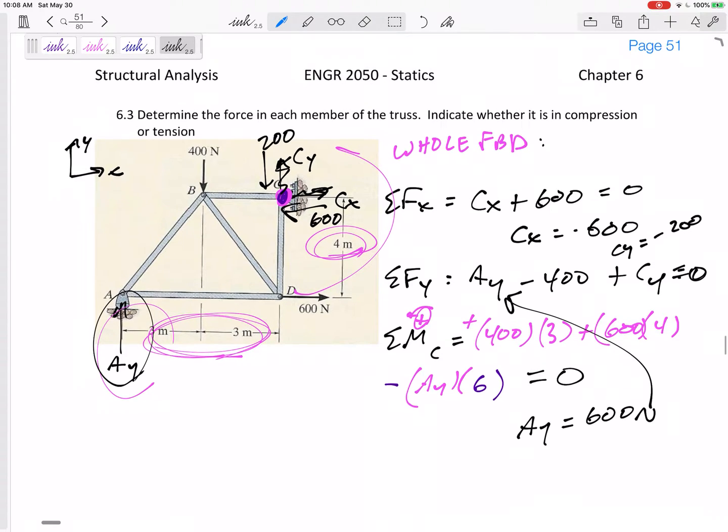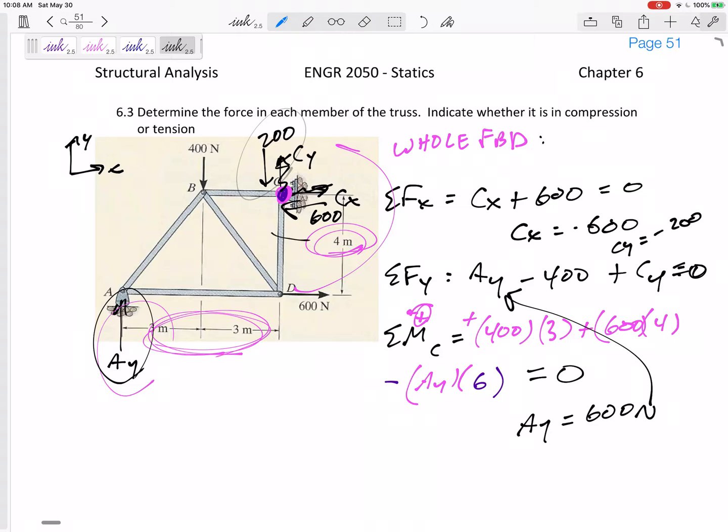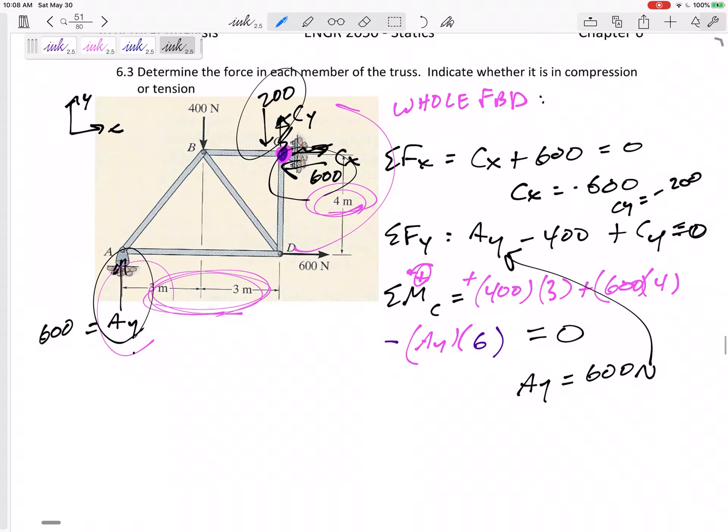So let me clean this up. I've got negative 200 down right there, 600 to the right here, and 600 up right there. That was just prep work. I haven't even gotten to the real heart of the truss part of the problem, the method of joints that I'm about to do.